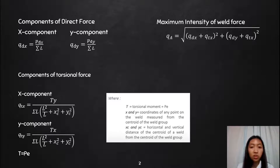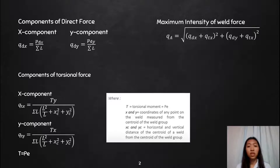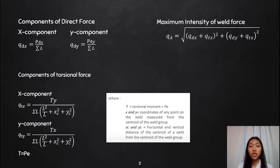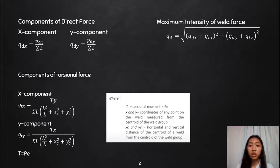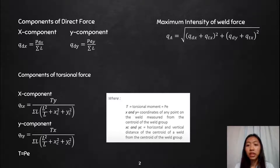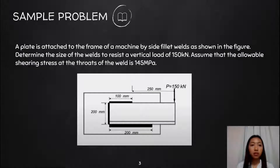Where T is the torsional moment equal to P times e. X and y are the coordinates of any point on the weld measured from the centroid of the weld group. And x_c and y_c are the horizontal and vertical distances of the centroid of a weld from the centroid of the weld group. For the maximum intensity of weld force, q_a = √[(q_dx + q_tx)² + (q_dy + q_ty)²].